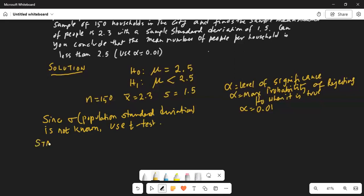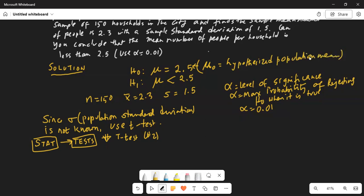We will press the stat button. Then highlight test on the top row. And scroll down to t-test, which is number 2. One thing we have to remember that the value in the null hypothesis is your hypothesized population mean. So, this is mu 0. Mu 0 is the hypothesized 2.5, hypothesized population mean.